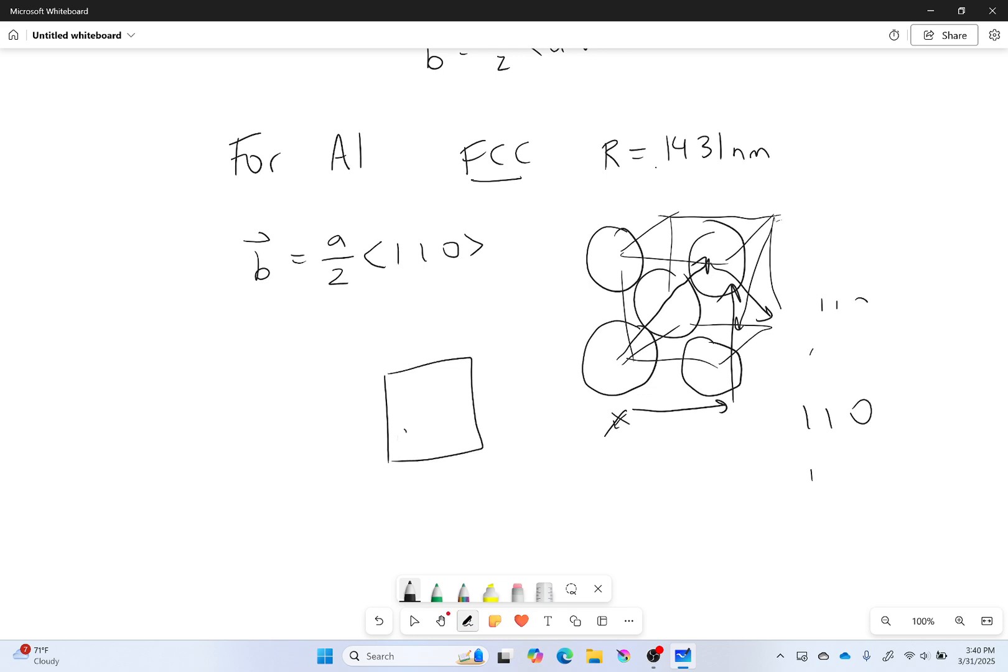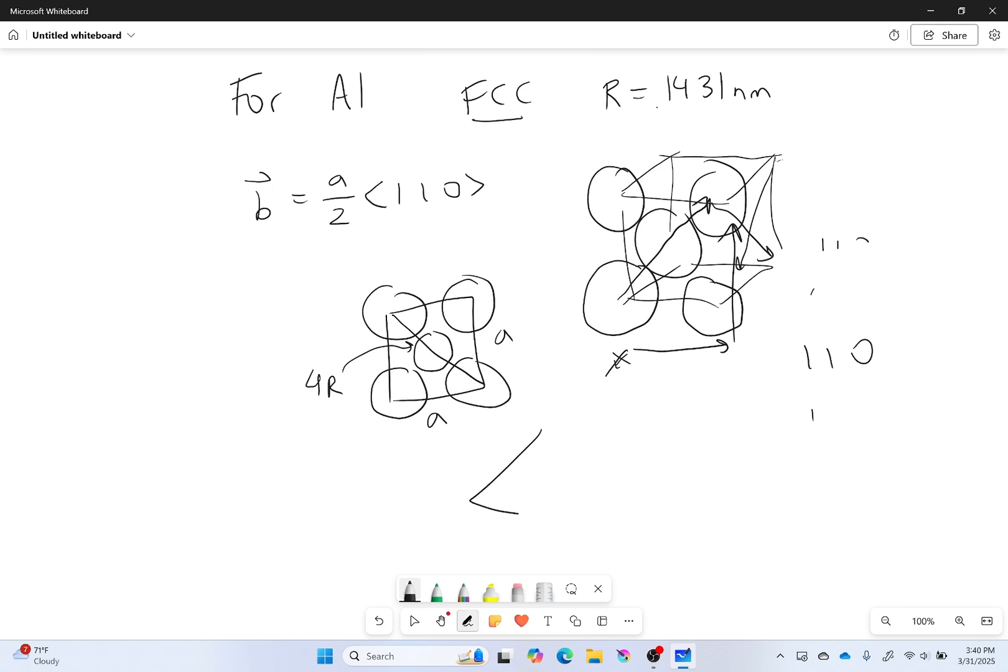So I'll just draw the front here. We know for face-centered cubic, it touches along that diagonal. And so this is A, that's A, and it has a length of 4R. So 16R squared is equal to 2A squared. A is going to be equal to 2 square root of 2 times R. And we already know what R is, it's 0.1431 nanometers, so I can plug that in. It's equal to 2 square root of 2 times 0.1431 nanometers.